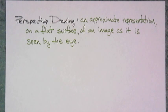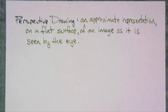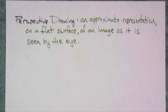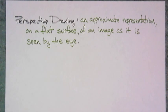As early as the Egyptians, there's evidence that they were studying this, trying to make things look more like they did in real life. Things further away should be smaller than the things that are closer — that's what it's based on. Euclid, in around 300 BC, actually introduced a mathematical theory about this in his book, The Optics.